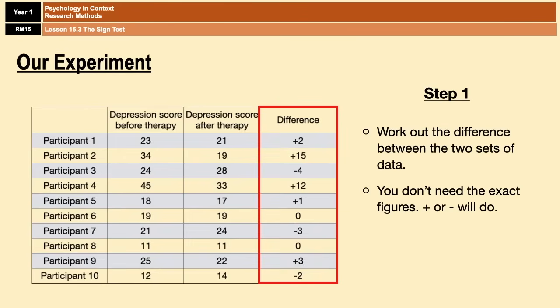Now just a couple of pointers for you at this stage. First thing is you don't need the exact figure. You just need to know whether it's a plus or a minus because the plus and the minus are essentially your signs that you're going to need for the sign test. In this case I've given you plus 2, plus 15, minus 4 and so on, but actually all we really need is plus, plus, minus. The second thing is that it doesn't matter which column is subtracted from which. Yes the signs will be switched around but it really doesn't matter because at the end of the day you'll still have the correct answer.